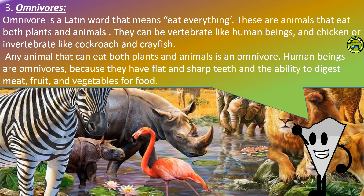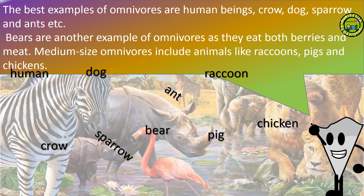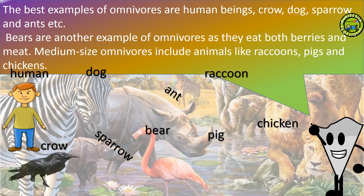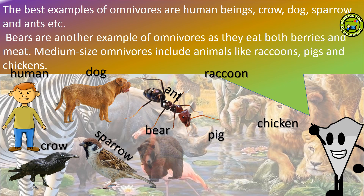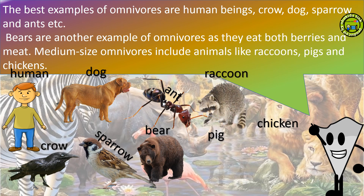Any animal that can eat both plants and animals is an omnivore. Human beings are omnivores because they have both flat and sharp teeth and the ability to digest meat, fruits and vegetables for food. The big examples of omnivores are human beings, crow, dog, sparrow and ants. These eat both berries and meat. A few more examples of omnivores include animals like raccoons, pigs and chickens.